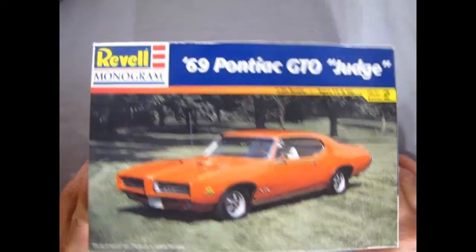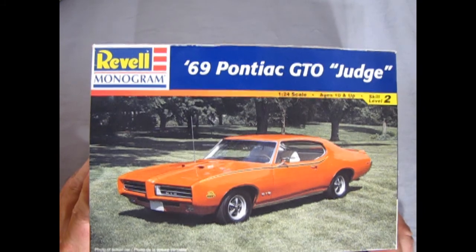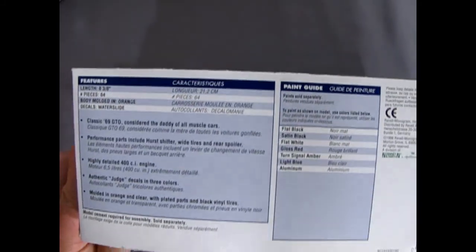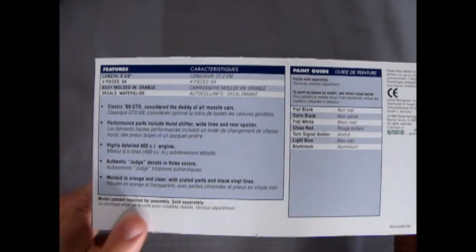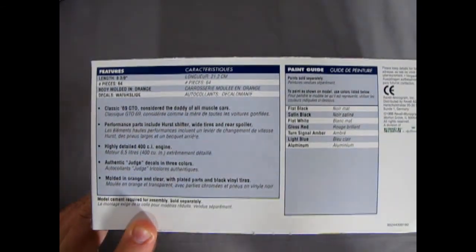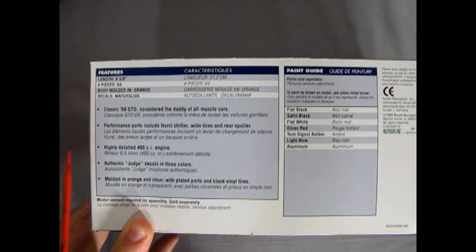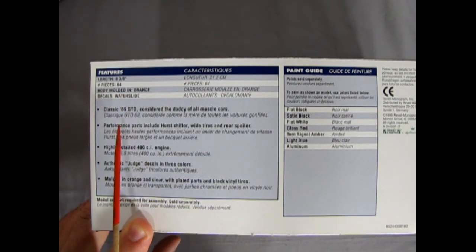Looking at the box you see a photographic image of our GTO. Good for reference. Up on the side here we have our features. The car is eight three-quarters inch long. There's 64 pieces so it's a good starter kit. Molded in orange.